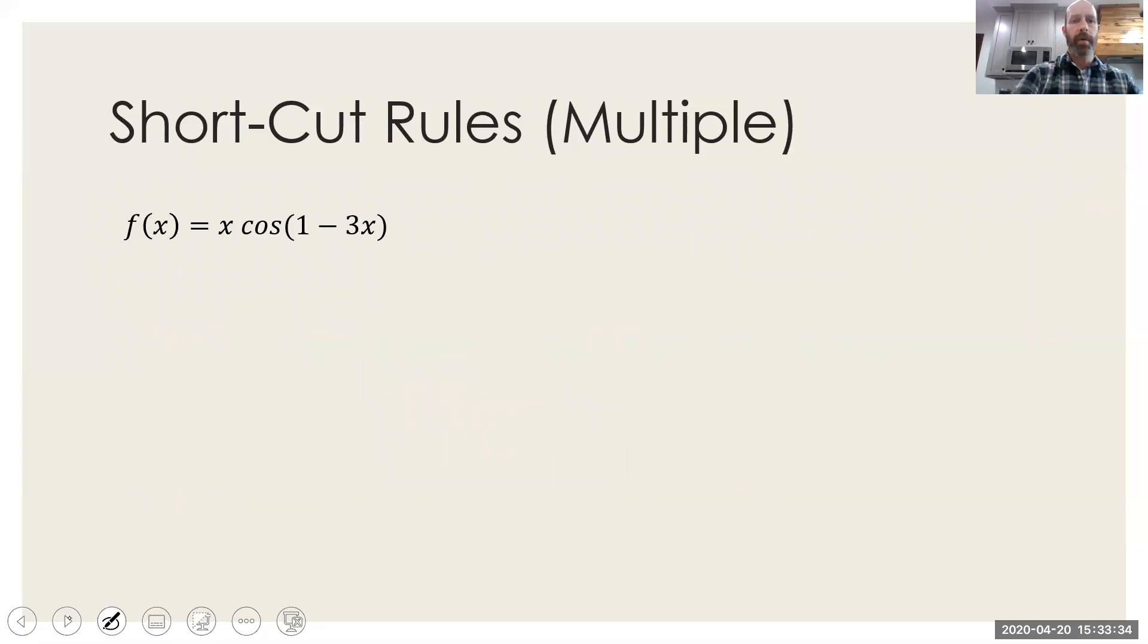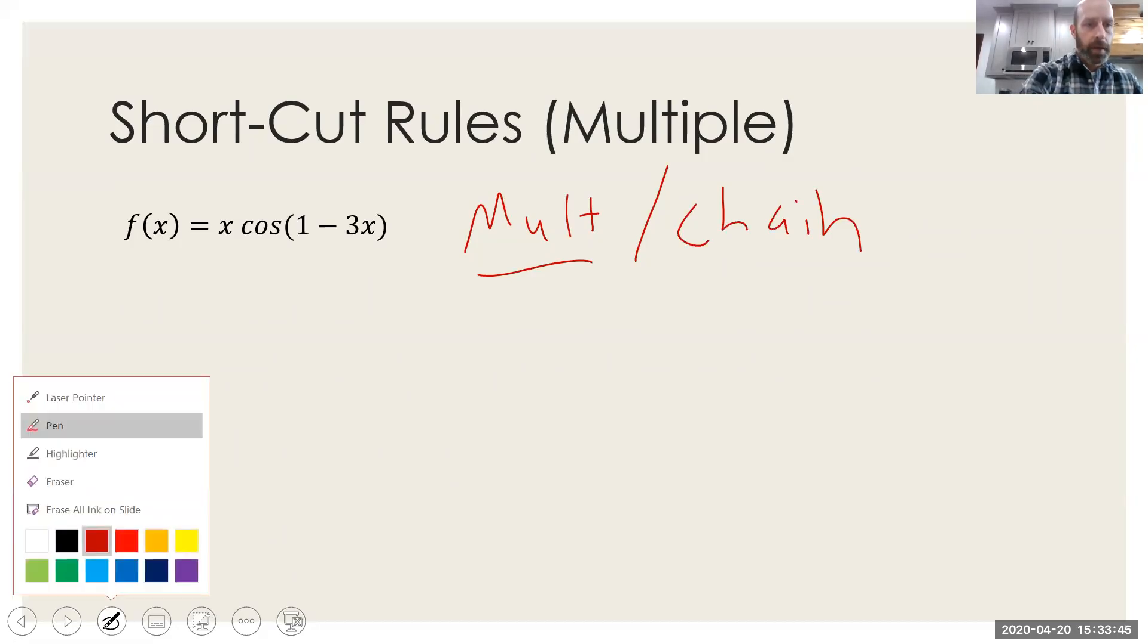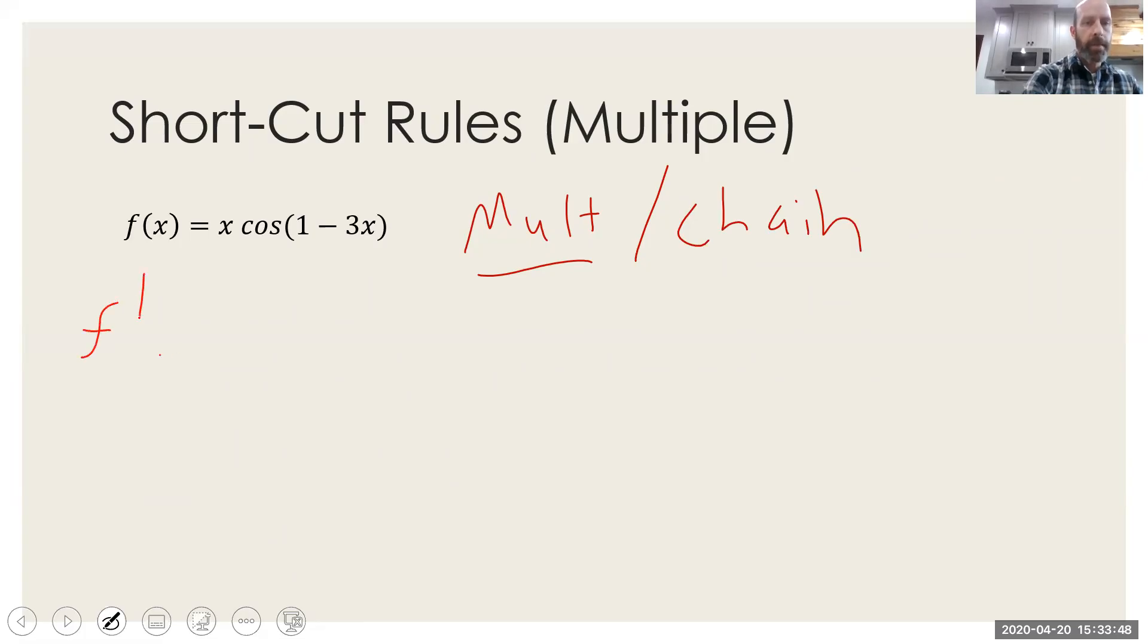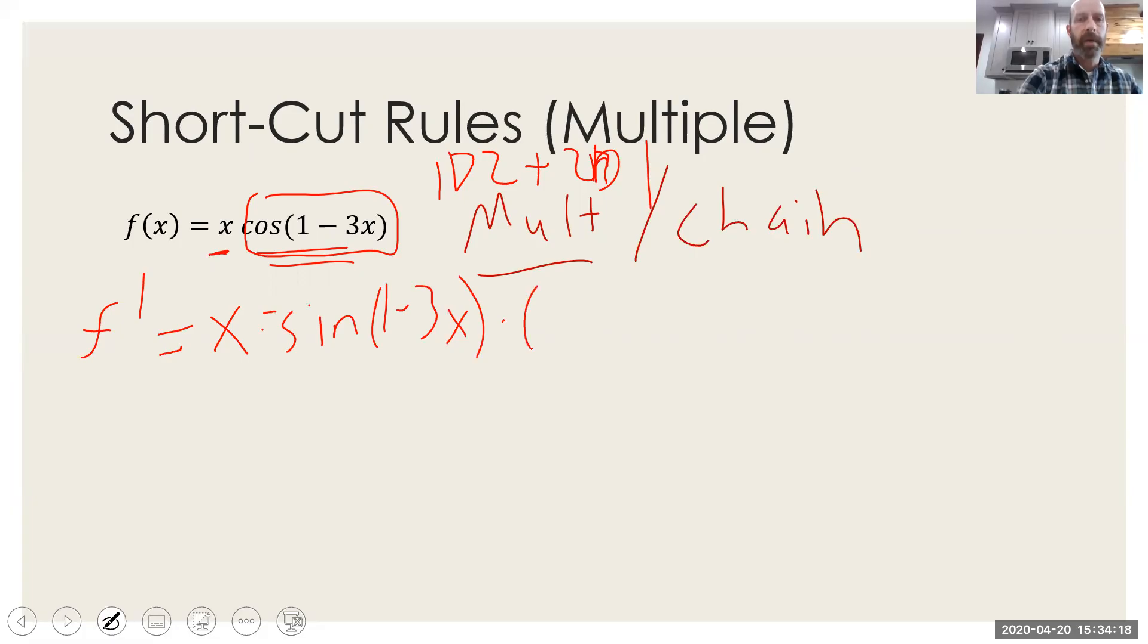Shortcut rules multiple. So here we've got a couple of things going on. We're going to need the multiplication rule and we're going to need the chain rule. So again, we're doing more differentiation. So f prime, multiplication rule remembers one d-two plus two d-one. So this is one and this is going to be two. So one is x times the derivative of two. Now to do the derivative of two, you have to do the chain rule. So you do the derivative of the outside, which is sine, and I believe it's going to be negative sine. Leave the inside alone. And then times that by the derivative of the inside. And I think the derivative of one minus three x is negative three.